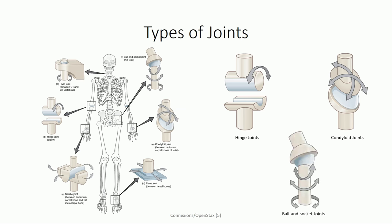Ball and socket joints are similar to condyloid joints, except that there is no longer an elongated axis. Instead, the convex surface is perfectly spherical, hence the name. Because of this we once again see rolling back and forth, wobble side to side, but now the spherical orientation means that the surface can rotate within the concave surface as well, making these joints multi-axial. The shoulders and hips are examples of ball and socket joints.